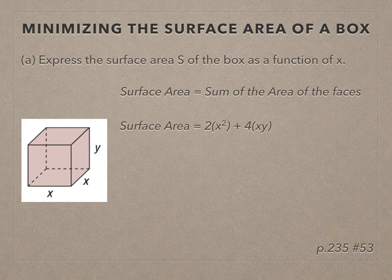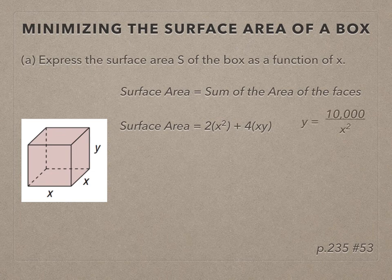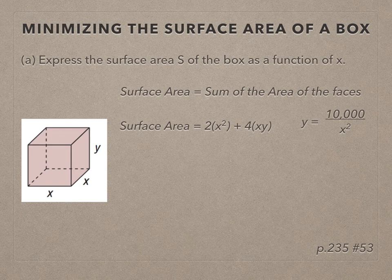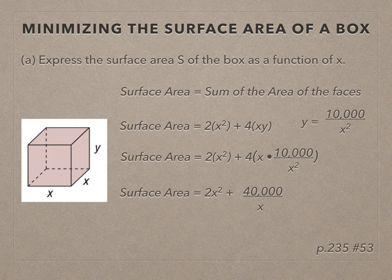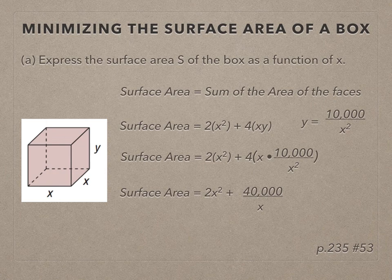But the directions say to express the surface area as a function of x. This is where that expression that we had in the previous slide comes in handy. We will substitute this in place of y. And now we can simplify this expression and we get our surface area S of x equals 2x squared plus 40,000 over x. You can see this is a rational function because we have x in the denominator.